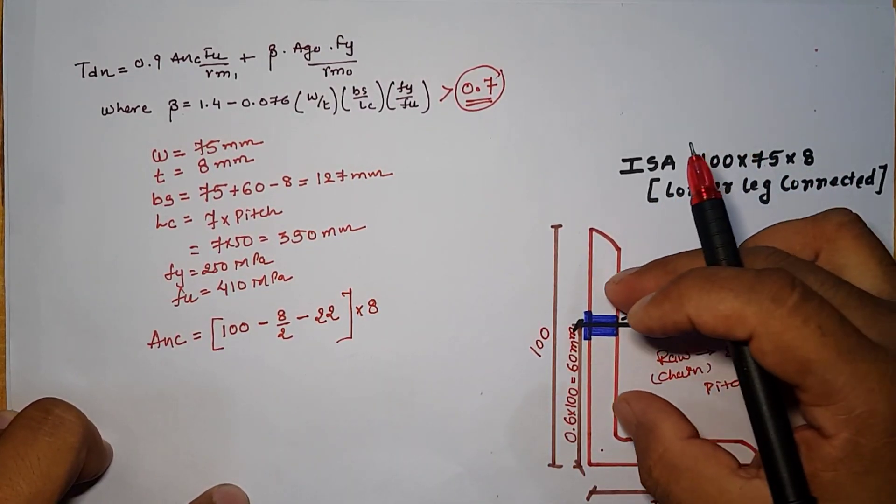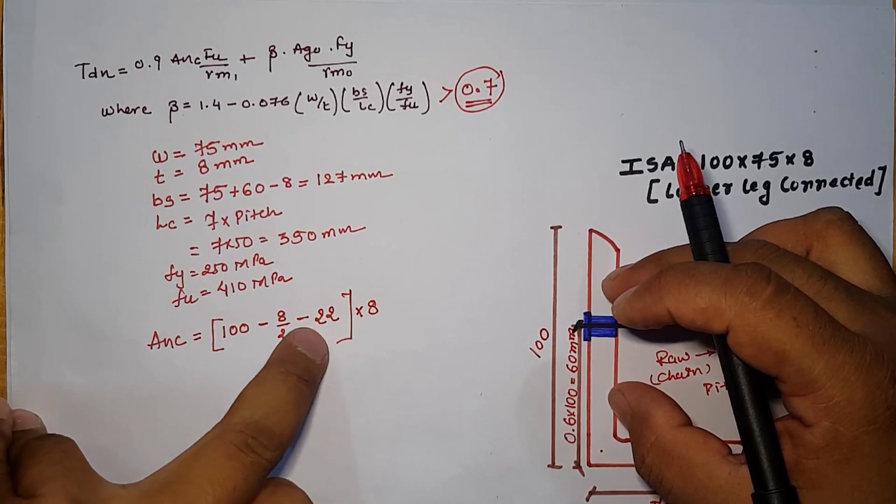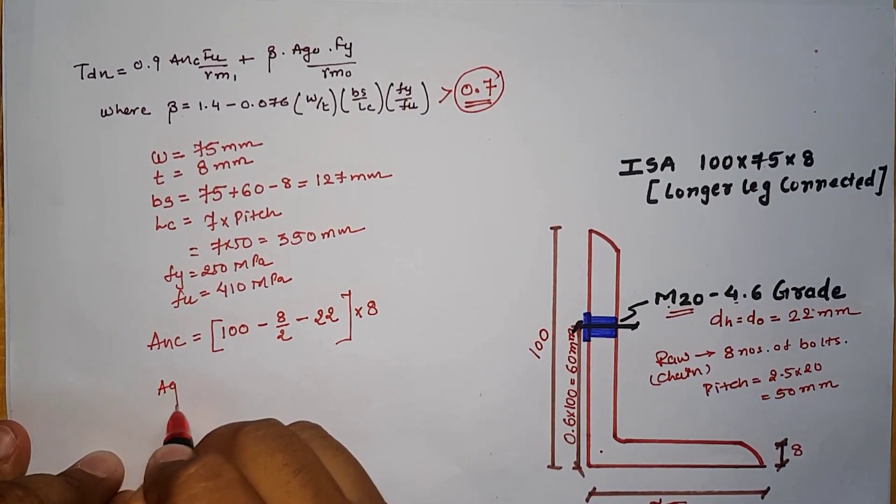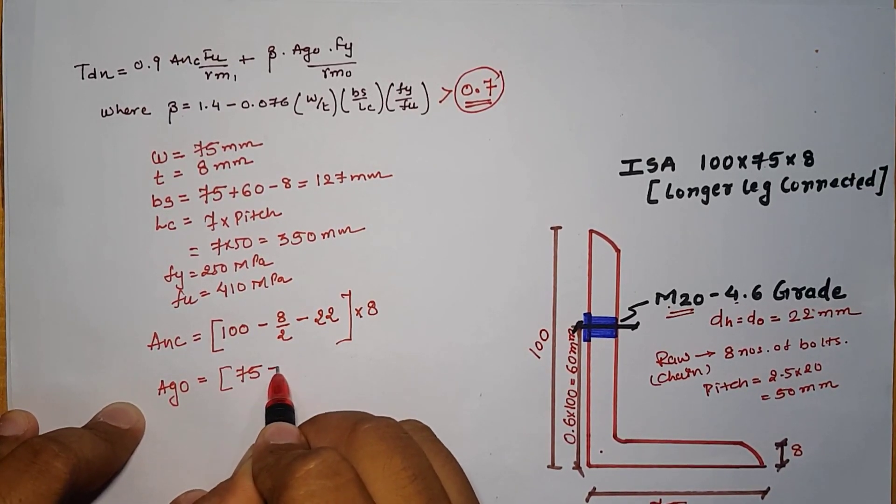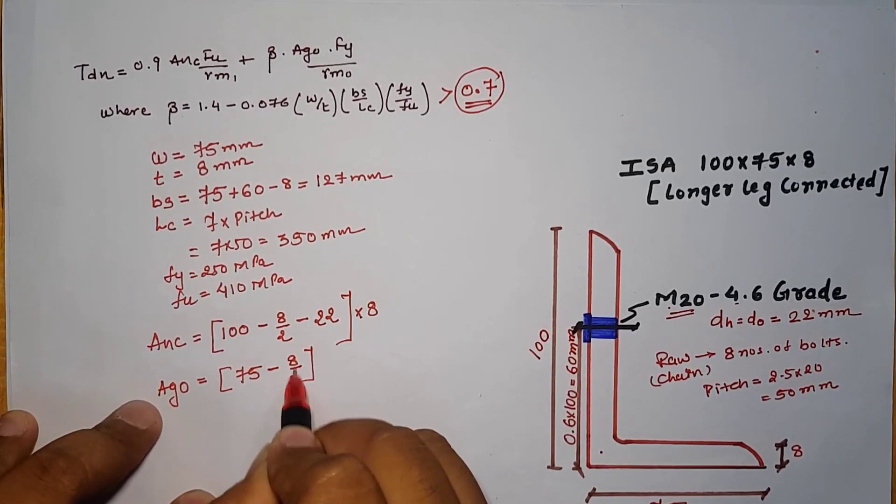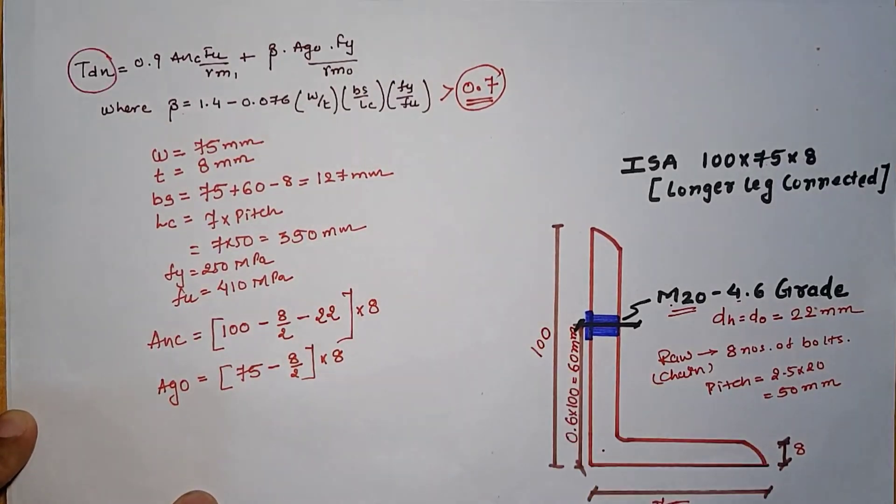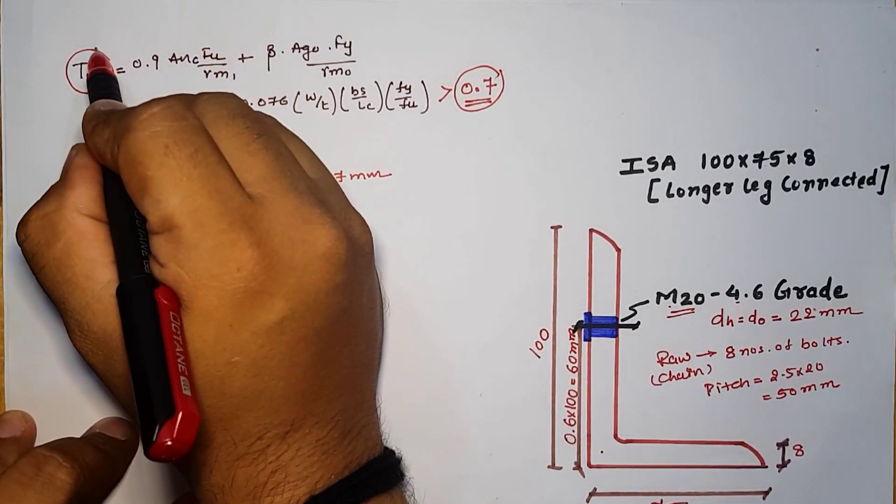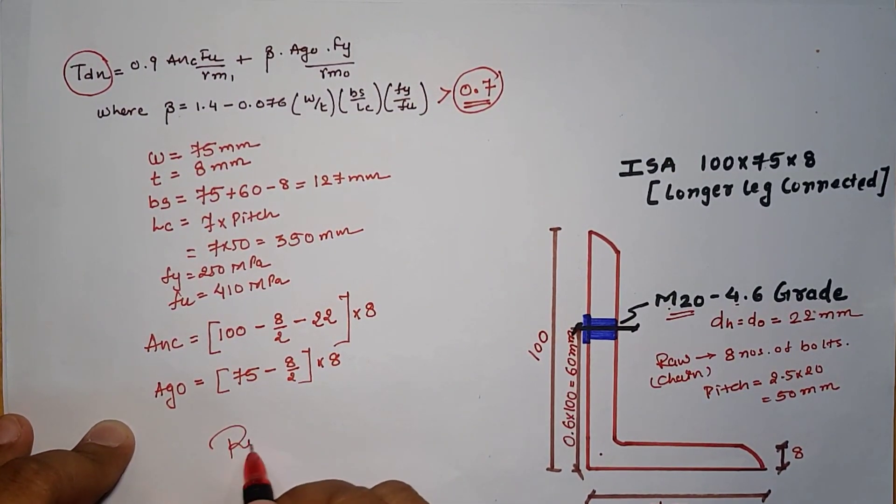One number of 22 mm diameter bolt is removed into 8. If 2 numbers of bolt is provided, then we have to remove 2 times the diameter of hole. Outstand leg 75 minus thickness by 2 for center point into 8. After putting all the values, we will have the value of TDN which is equal to rupture strength.